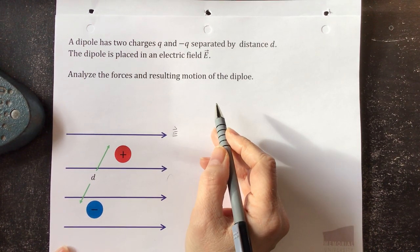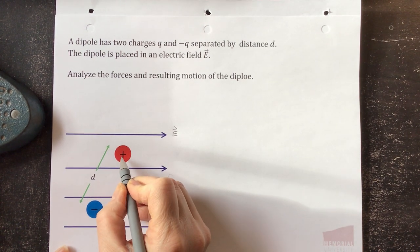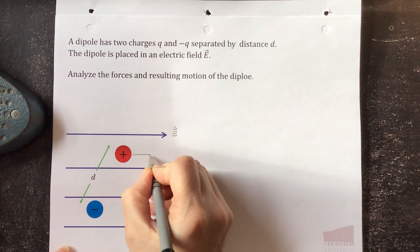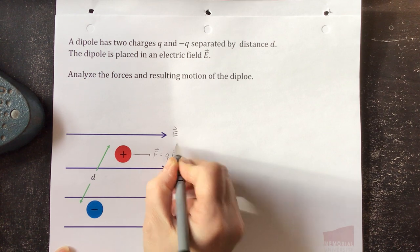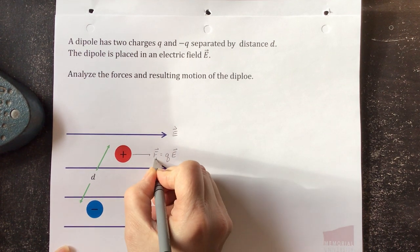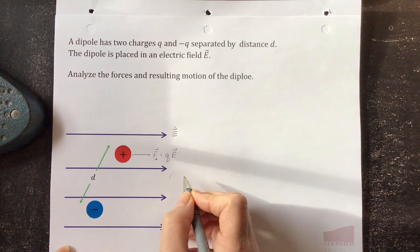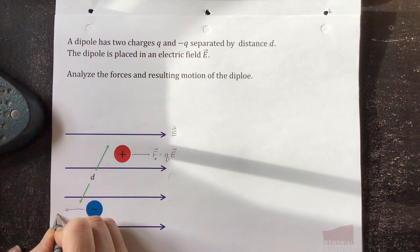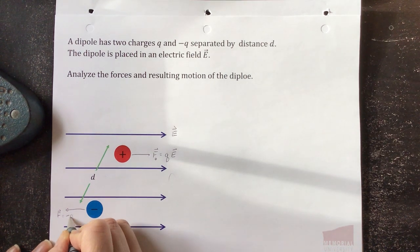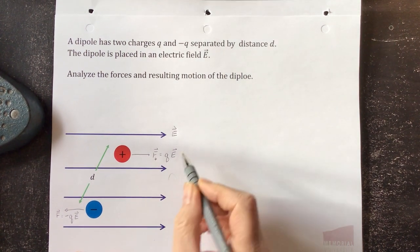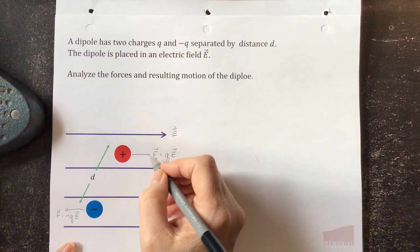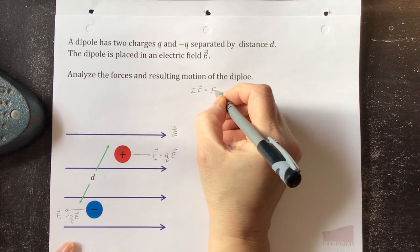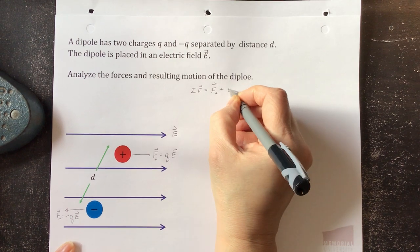Let's start to think about the forces that act on the dipole. This is a positive charge in an electric field — it's going to feel an electric force. That electric force F is equal to charge times the electric field. Our charge is positive, so the force and the field are going to be in the same direction. For the negative charge, the force is going to be opposite the direction of the electric field: F equals minus q times E. The sum of the forces is the force on the positive charge plus the force on the negative charge.